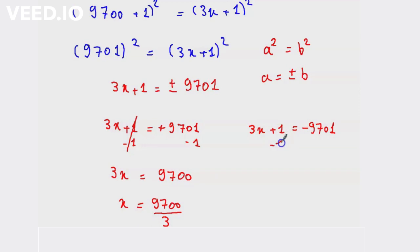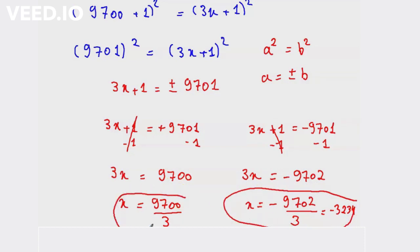And here subtract 1 on both sides, so 3x equal to minus 9702. Divide by 3, so x equal to minus 9702 over 3 equals minus 3234.